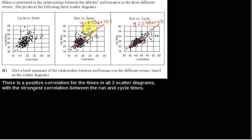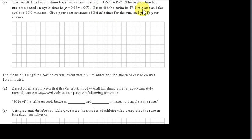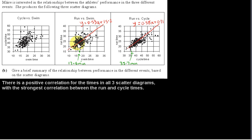These best fit lines minimize the squared vertical distances of each point in the scatter diagram to the line. The assumption is that we're dealing with a sample of values from a population that lies along the line, give or take some random error — that's the assumption for linear regression. Brian did the swim in 17.6 minutes and the cycle in 35.7 minutes; we need to estimate his run time.